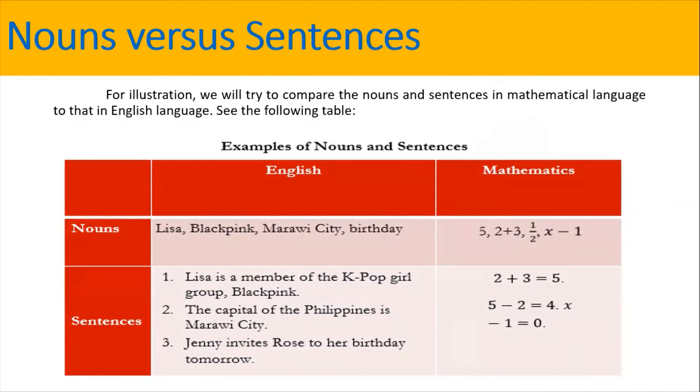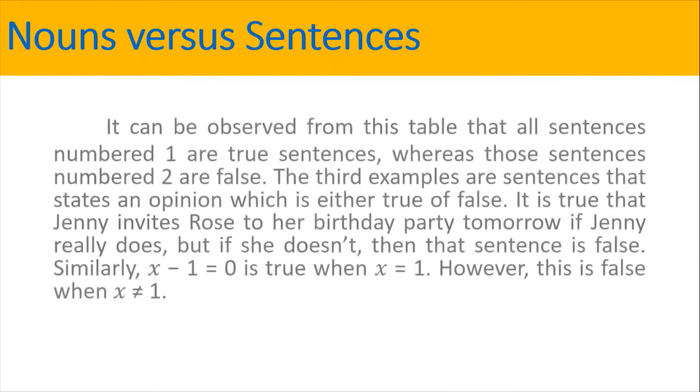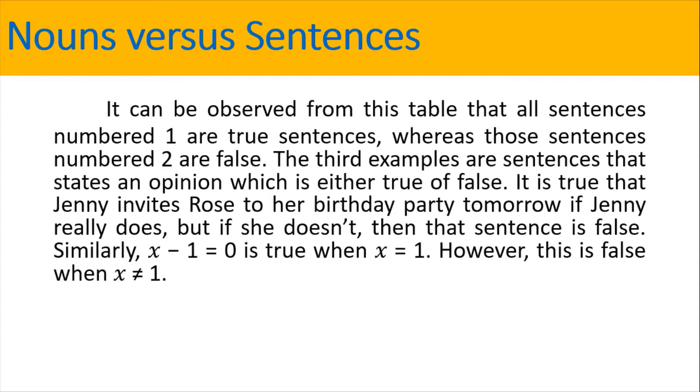Going back to English, Lisa is a member of the K-pop girl group, which is Blackpink. And the capital of the Philippines is Marawi City. And then we also have Jenny invites Rose to her birthday tomorrow. Now, with the mathematics, we have 2 plus 3 equals 5. And we have 5 minus 2 equals 4 times x. And then we have x minus 1 is equal to 0.